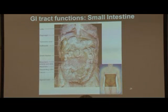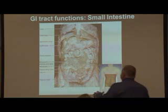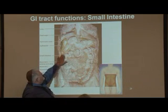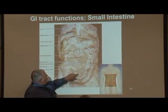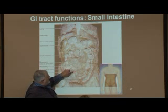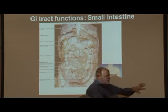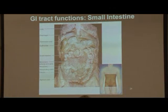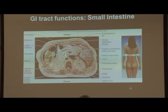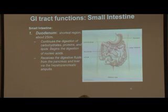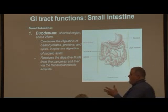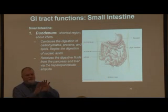This is actually a cadaver showing that relationship. We can see the mesocolon here and the mesentery as it's attached to the small intestine as the small intestine is being separated and pulled apart. The duodenum is the shortest region of the small intestine, about 25 centimeters long, or about 10 fingers.